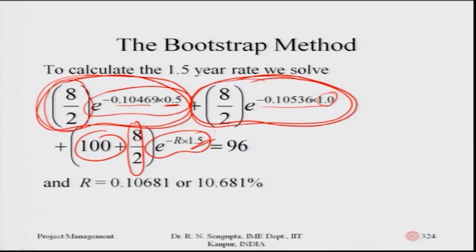To summarize: the continuous compounding interest rate for half a year is 10.469%, for one year it is 10.536%, and for one and a half years it is 10.681%.